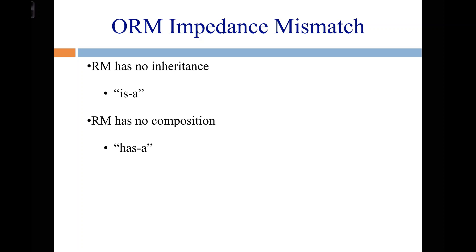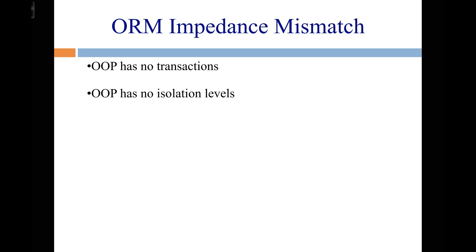There's no 'is-a', and there's also not really 'has-a' — composition. You could say a student has an enrollment record because there's a foreign key pointing to another table, but it's not really the same as saying an object lives inside another object and is fundamentally a part of it. On the other side, OOP has no transactions unless you have a system library that implements them. If you have concurrency issues, you're probably thinking more along the lines of mutexes. There are no isolation levels like in the relational model.